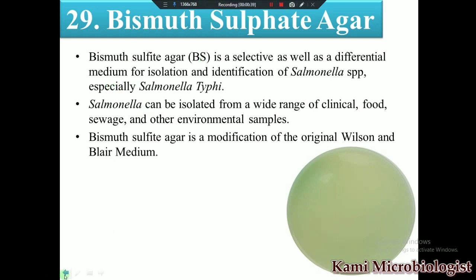Bismuth sulfate agar medium is actually a selective as well as a differential medium, and we mostly use it for the isolation and identification of Salmonella species, mostly Salmonella typhi. We isolate Salmonella species from clinical, food, sewage, and environmental samples using this medium.